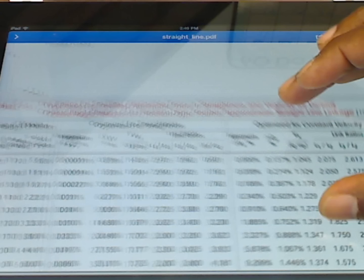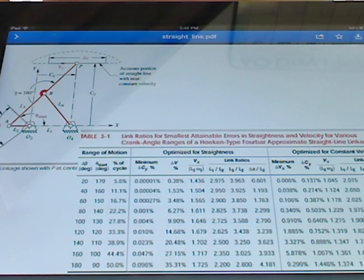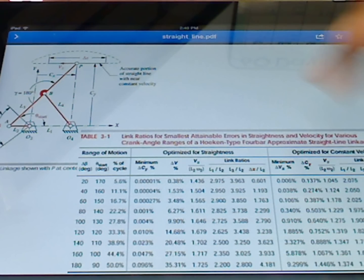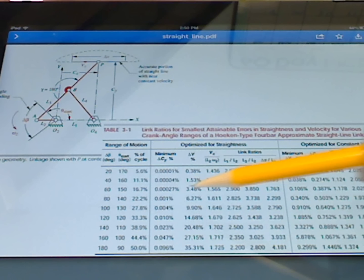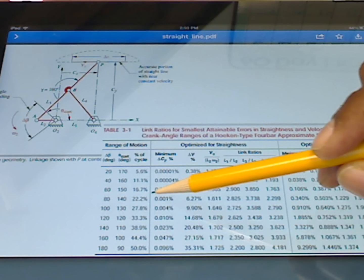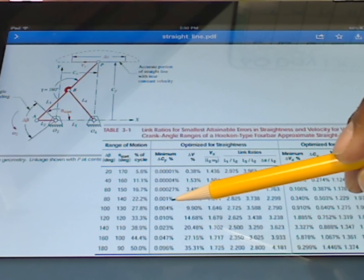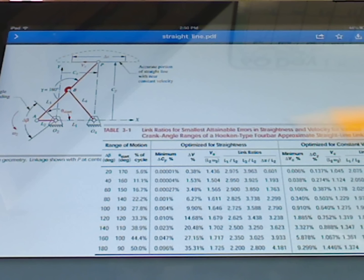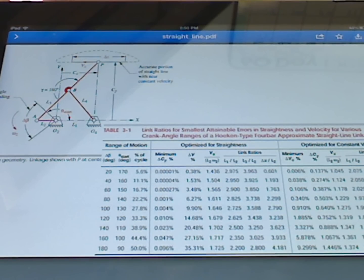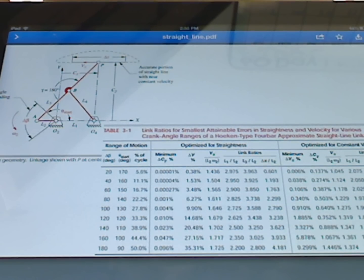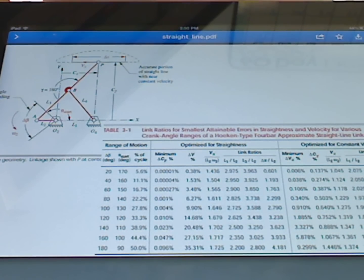And so this just kind of shows you that depending on what we're trying to do in our particular design with the Hoeken, we can use this table to not just design the linkage to see what the link ratios are going to be, but we also have a value that will tell us how close we are to either optimum straightness or optimum constant velocity. And that's the end of my intro to straight line mechanisms.